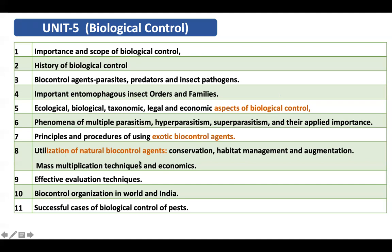The next topic is the utilization of natural biological control. A key approach is conservation — how we can conserve our biocontrol agents. This involves reducing pesticide use, growing trap crops and preferred crops that attract biocontrol agents, and doing habitat management.